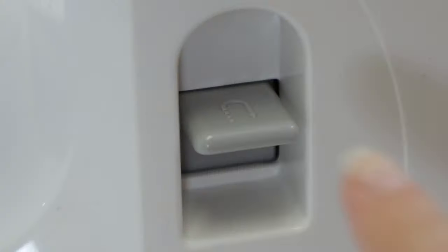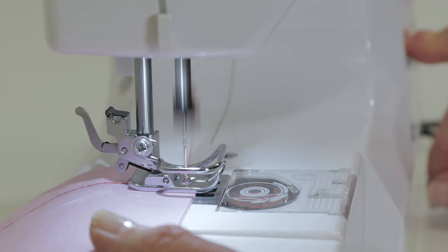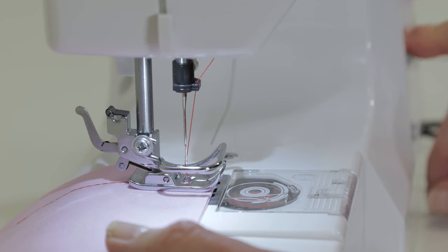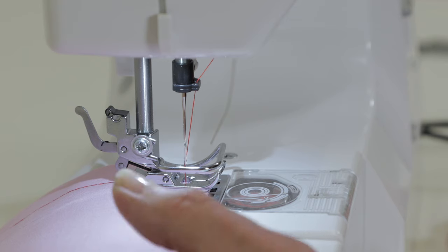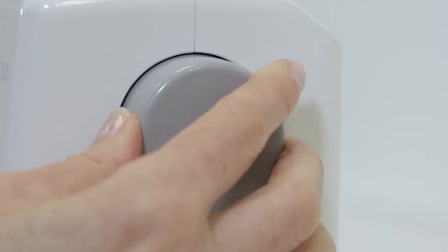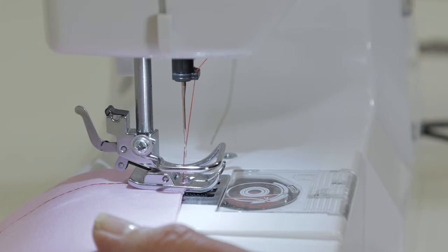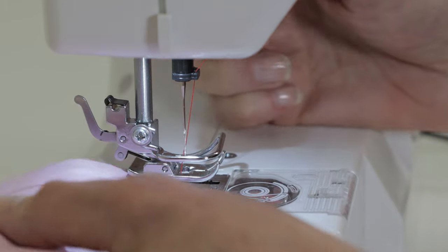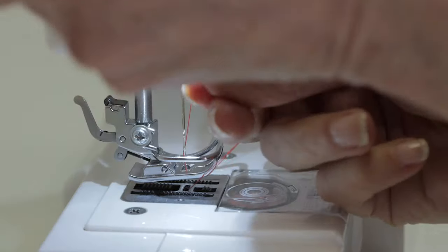When you come to the end of your fabric, press and hold the reverse lever again as you step on the foot control to sew two or three stitches and then sew forward again to finish. Turn the hand wheel toward you until the needle is all the way up, raise the presser foot lifter, and cut your thread.